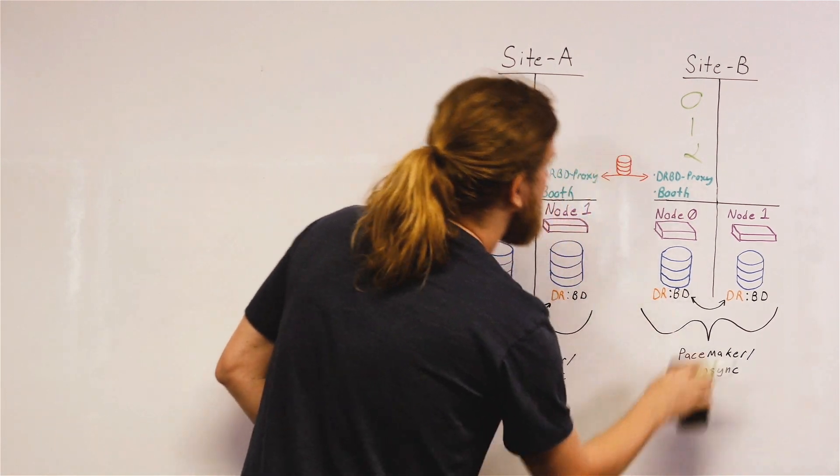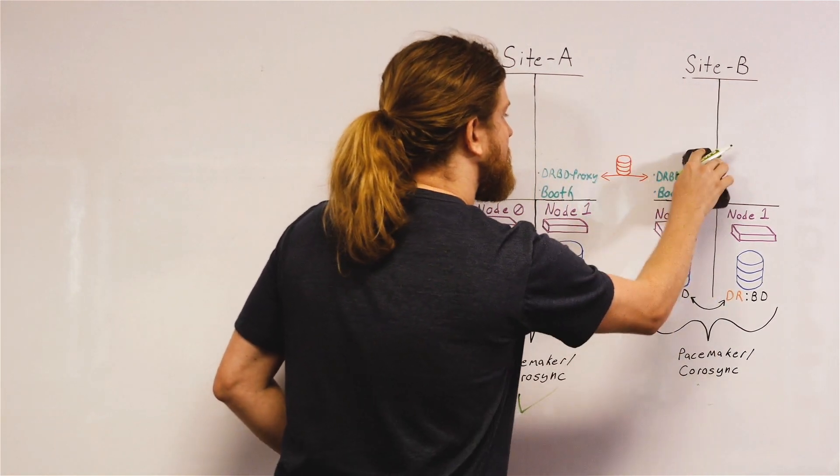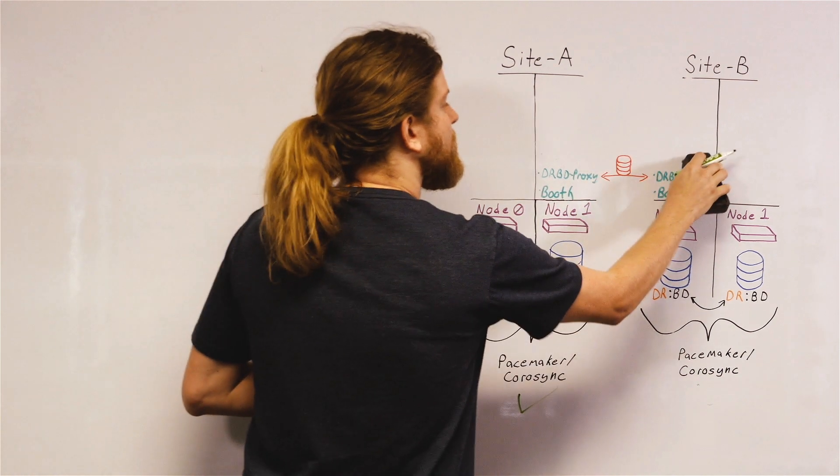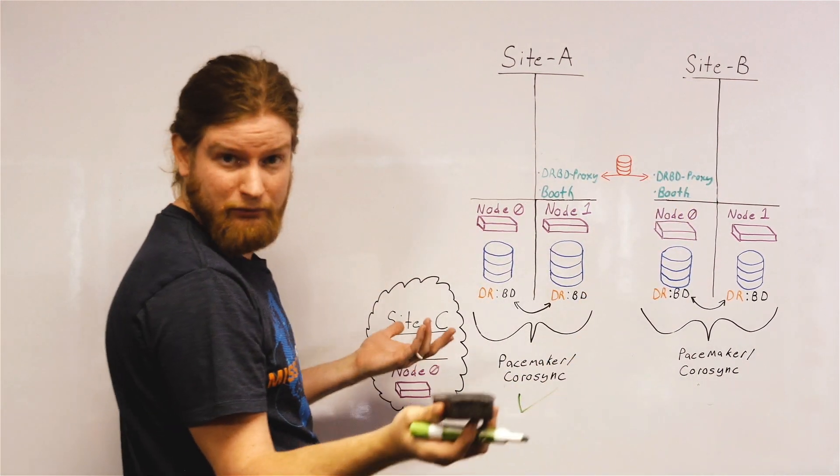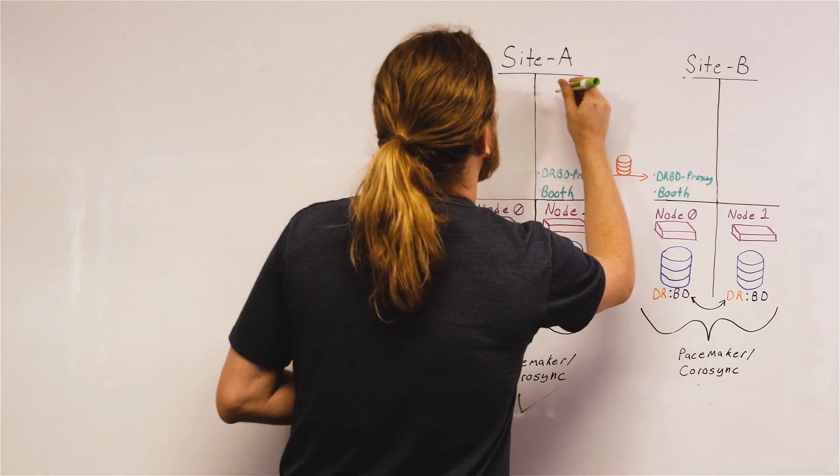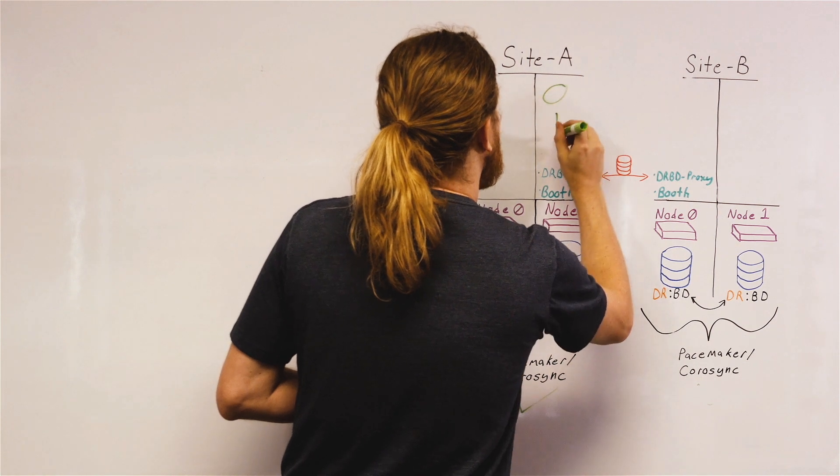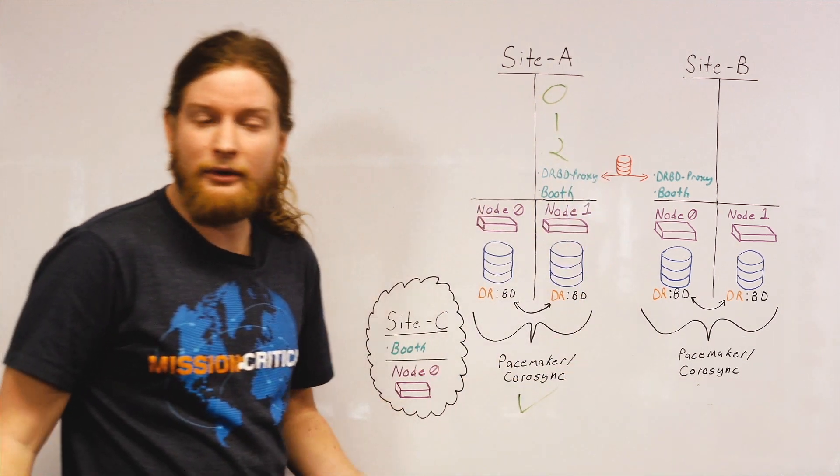And services that were running on B stop gracefully or not gracefully if the site was completely down due to something like a link disruption. And everything runs on A again.